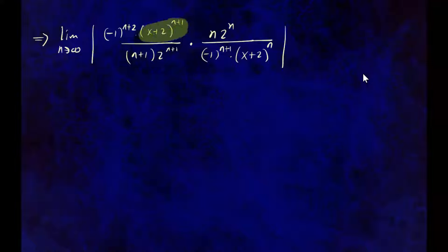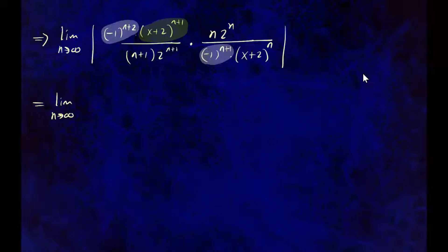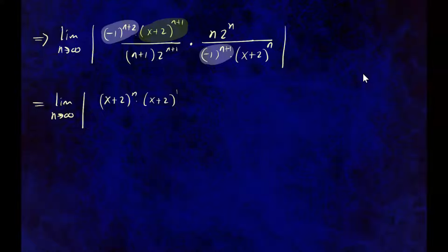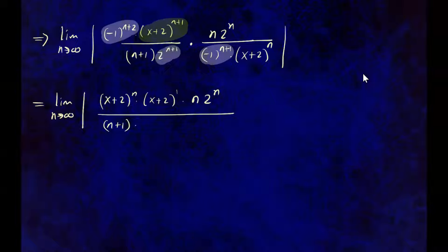We can rewrite this expression. Taking the absolute value, the negative 1 to some power terms disappear — absolute value throws them out, so we can ignore them. Now x plus 2 to the power n plus 1 can be written as x plus 2 to the n times x plus 2 to the 1 by laws of exponents. On the numerator we still have n times 2 to the n. In the denominator, n plus 1 times 2 to the n plus 1, which is 2 to the n times 2 to the 1, and then x plus 2 to the n — all in absolute value.